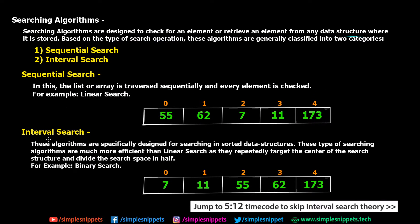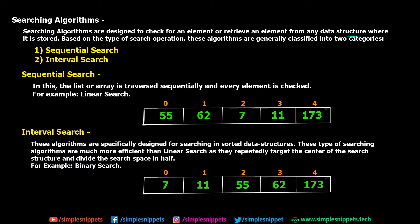The other type is interval search. Unlike sequential search, these algorithms usually work on sorted data structures. You can see the same array but now the numbers are sorted in ascending order: 7, 11, 55, 62, and 173. These interval search algorithms specifically work on such ordered arrays or data structures, and they are much more efficient than linear search as they repeatedly target the center of the structure and divide the search space in half.